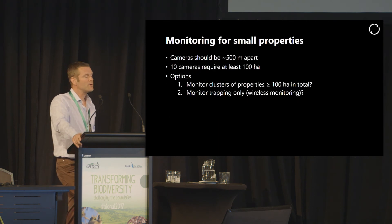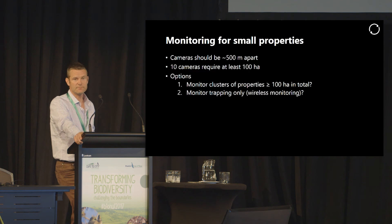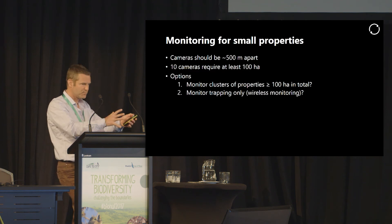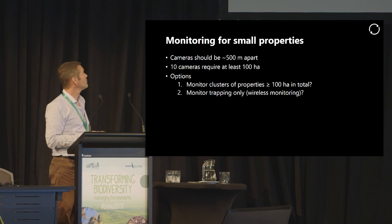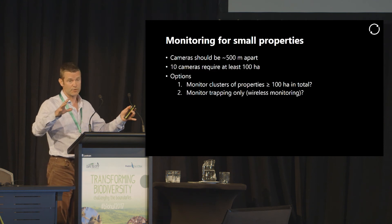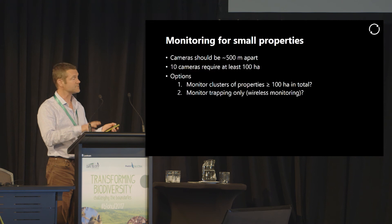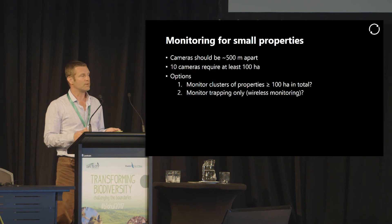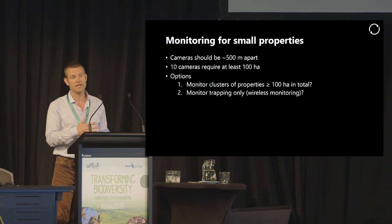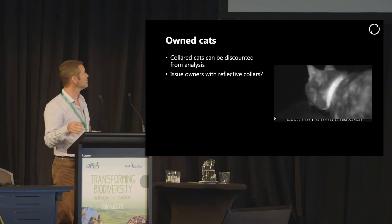The one remaining problem is what to do about very small properties. There are some lifestyle blocks that are just a few hectares — you can't fit 10 cameras in a few hectares unless you put them all in one cluster, and that's fairly pointless. There are a couple of possibilities: one would be to monitor clusters of adjacent properties, dividing them up into areas of at least 100 hectares comprising five or six separate properties monitored as a lump. Alternatively, for very small properties we might forego the camera monitoring and just rely on the wireless trap network to ensure that landowners are servicing their traps as they should, or of course some combination of those two techniques.